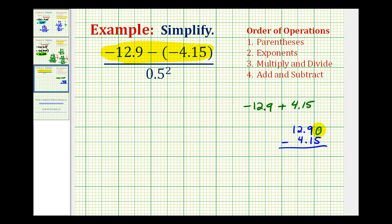So let's add a zero here in the hundredths place value, and then bring the decimal down into our difference. So we have to borrow from the 9, this would be 8, and this would be 10. 10 minus 5 is 5, 8 minus 1 is 7, and here we have 12 minus 4, that would be 8. But remember, we know this sum has to be negative, so it's going to be negative 8.75.